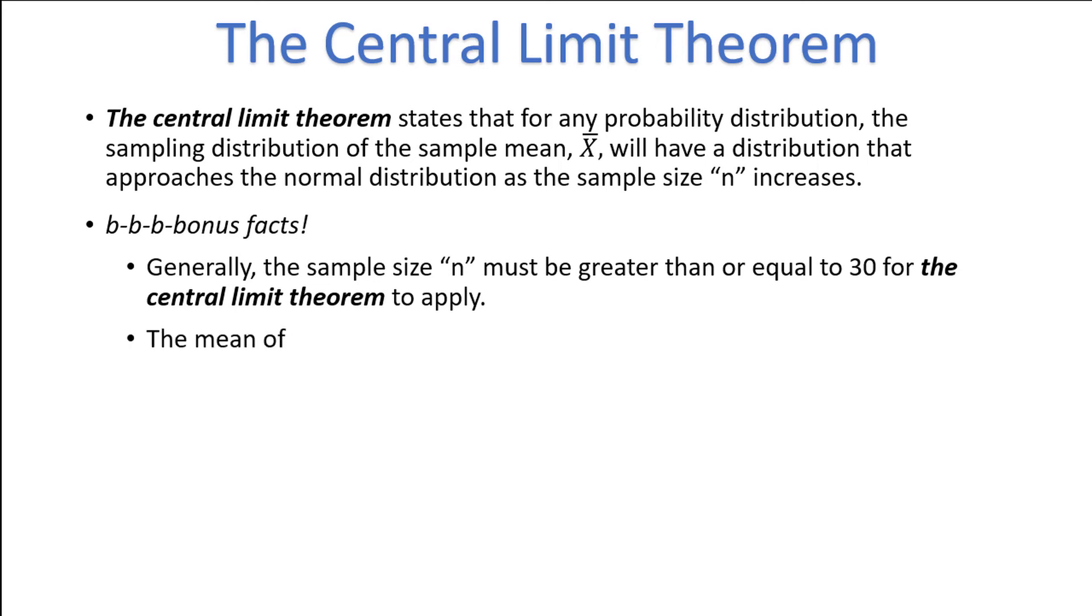The mean of the sampling distribution is the same as the mean of the original distribution. That is, mu of X-bar is the same as mu. This shouldn't be too surprising. If the mean wait time at a restaurant is 16 minutes, the average of 30 means will also have a mean of 16 minutes.